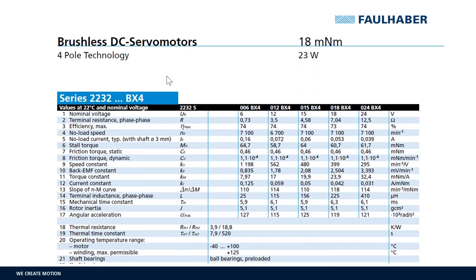The header shows the basic information like product name and the motor technology — here 2232 BX4 and brushless motor. A general remark at first: all shown values are valid for 22 degrees Celsius and nominal voltage.